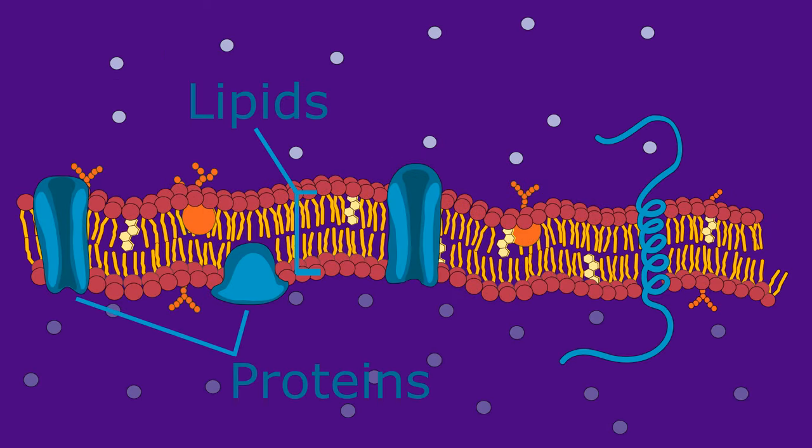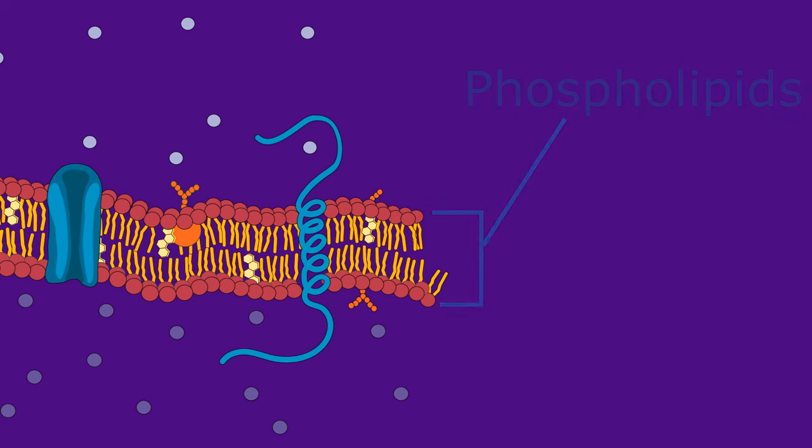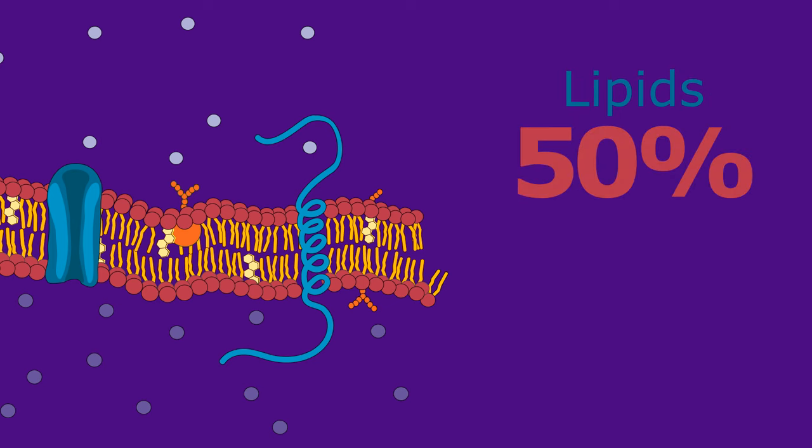The cell membrane is mainly composed of lipids and proteins. Its framework consists of a double layer of phospholipids. Lipids make up 50% of most membranes, although depending on the location, they may make up up to 80%. The remainder is made from proteins. Lipids make the membrane flexible, and the proteins help transfer molecules across the membrane.